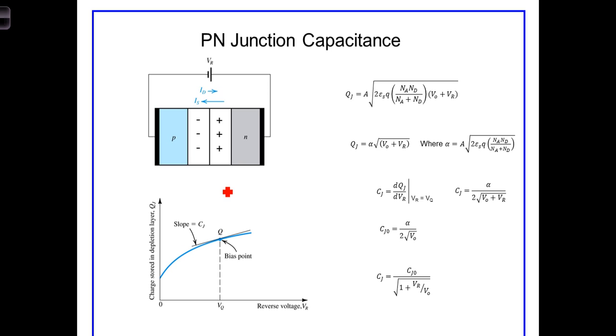This arises when the junction is reverse biased. If you recall from our studies, we came up with the formula for the charge stored in a reverse biased junction. That was given by this.